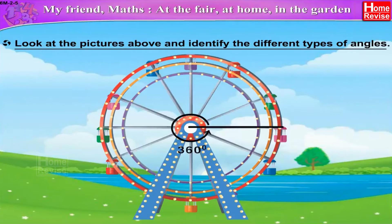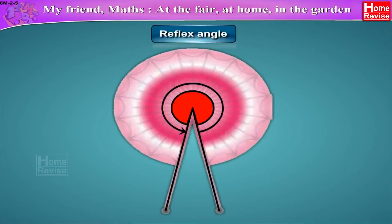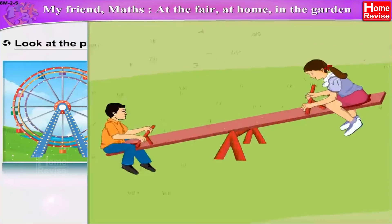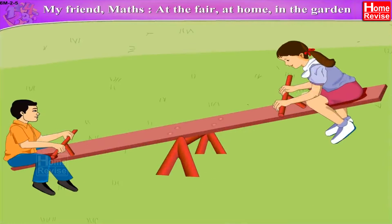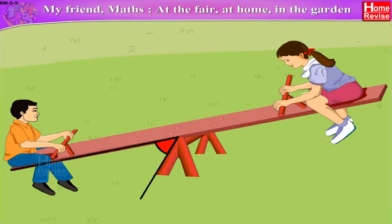These are straight angles. These are all reflex angles. This is a complete angle. Now look at the next picture of a hand fan. This is a reflex angle and this is an acute angle. The third picture is of a see-saw. This is a straight angle. This angle is an acute angle.